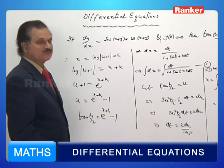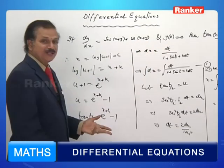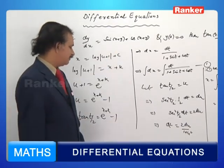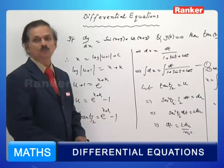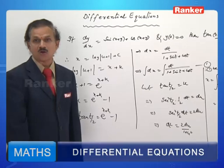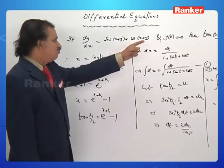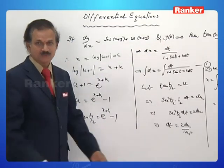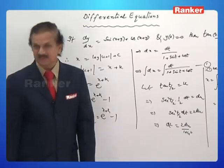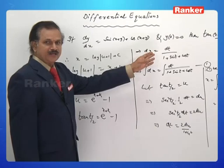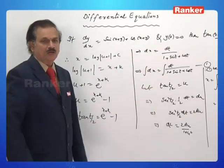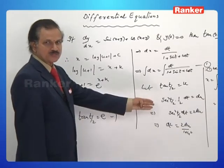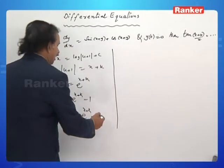The constant k is still unknown. We use the initial condition y(0) equals 0, which has not been used yet, to determine k. Substituting x equals 0 and y equals 0 into tan((x+y)/2) equals e^(x+k) minus 1 gives us the value of k.